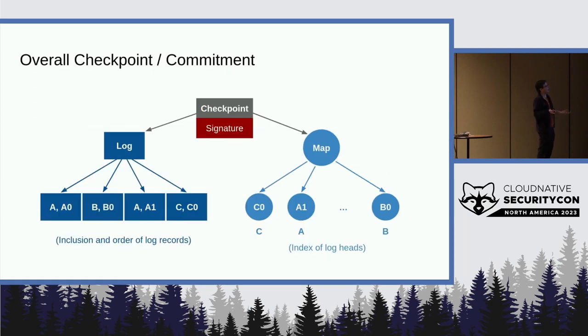And these two data structures get combined together into a single checkpoint, which includes the hash of both, the root hash of both, and a signature by the registry. And that is the state that we're committing to for the registry. And you'll note that this uniquely identifies the state of every package at one point in time.